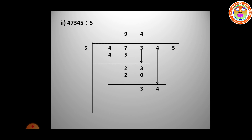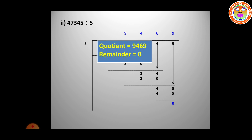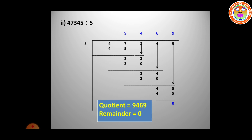Bring the next number down — it becomes 34. Five 6's are 30, remainder is 4. Bring the next number down — it becomes 45. Nine 5's are 45, remainder is 0. So the quotient is 9,469 and the remainder is 0.